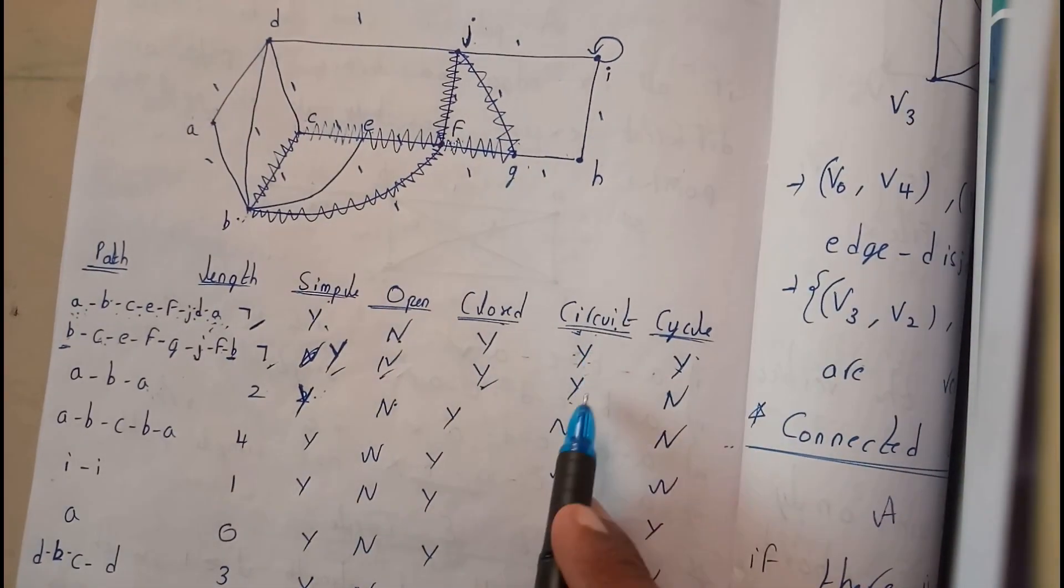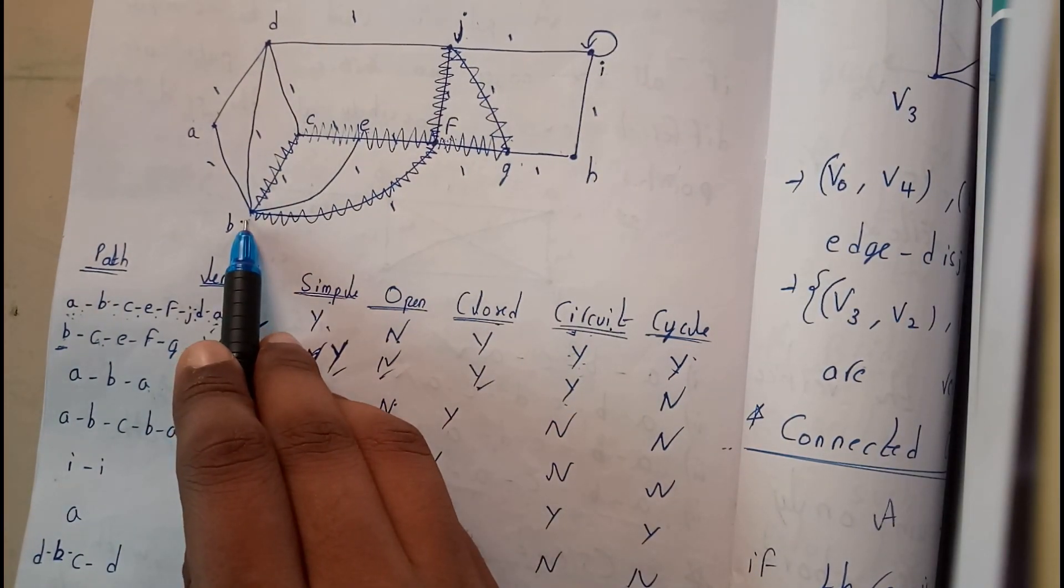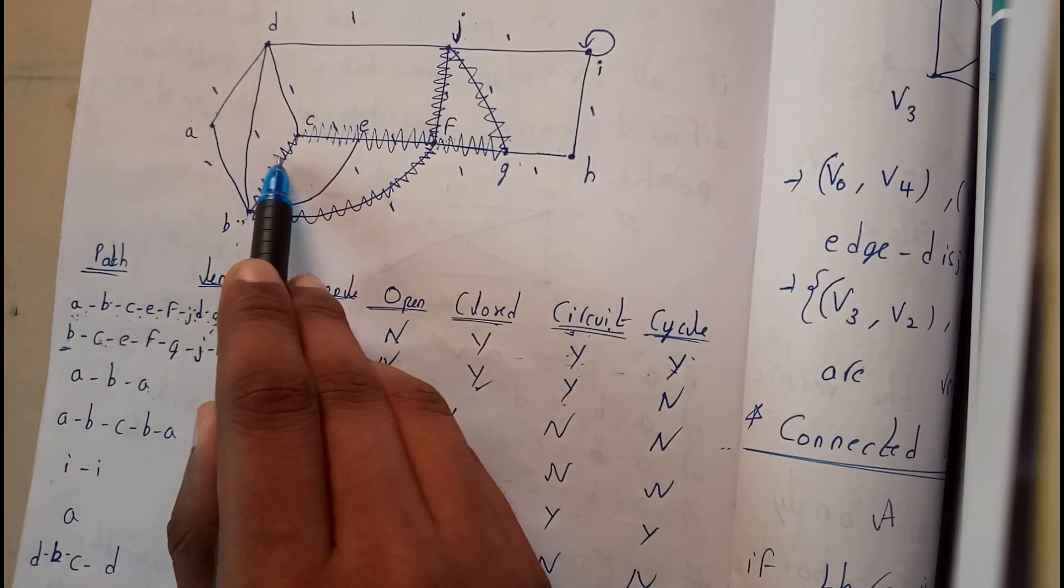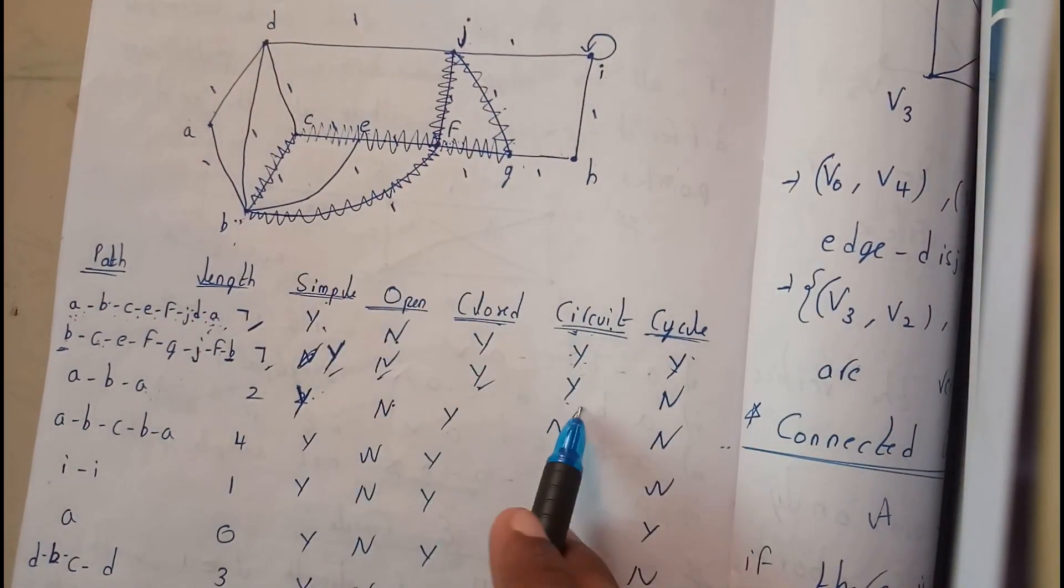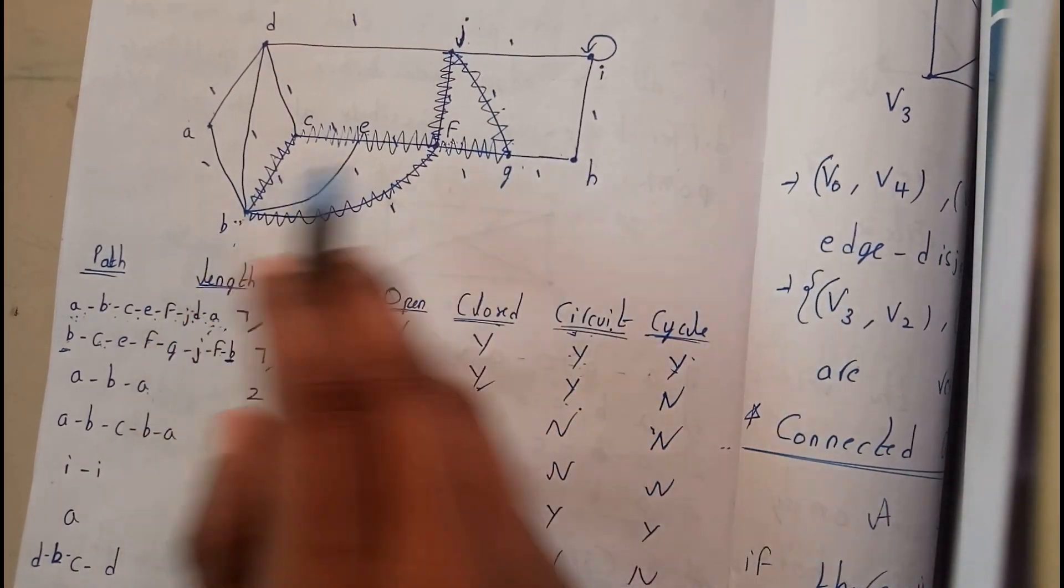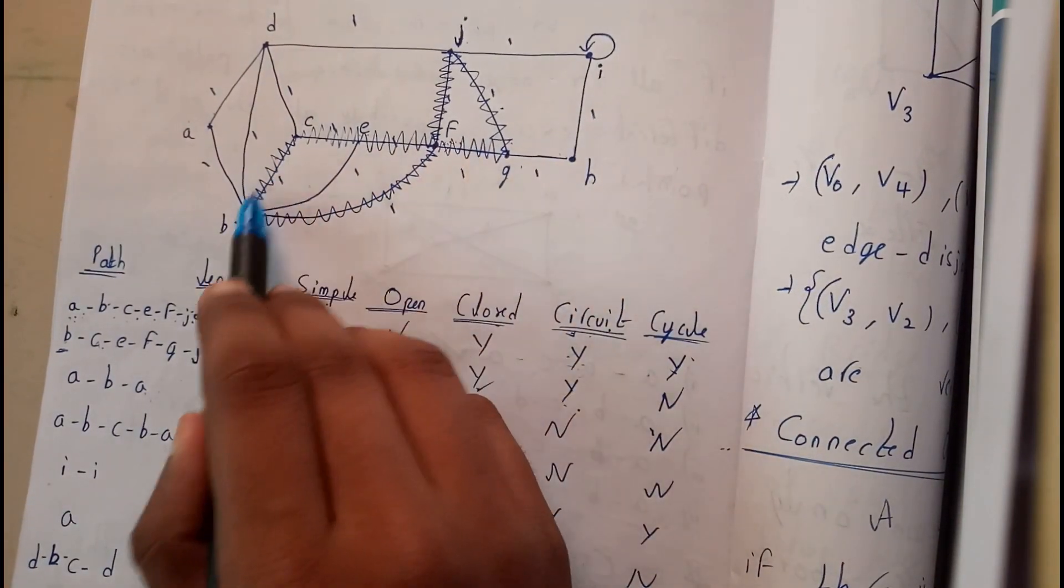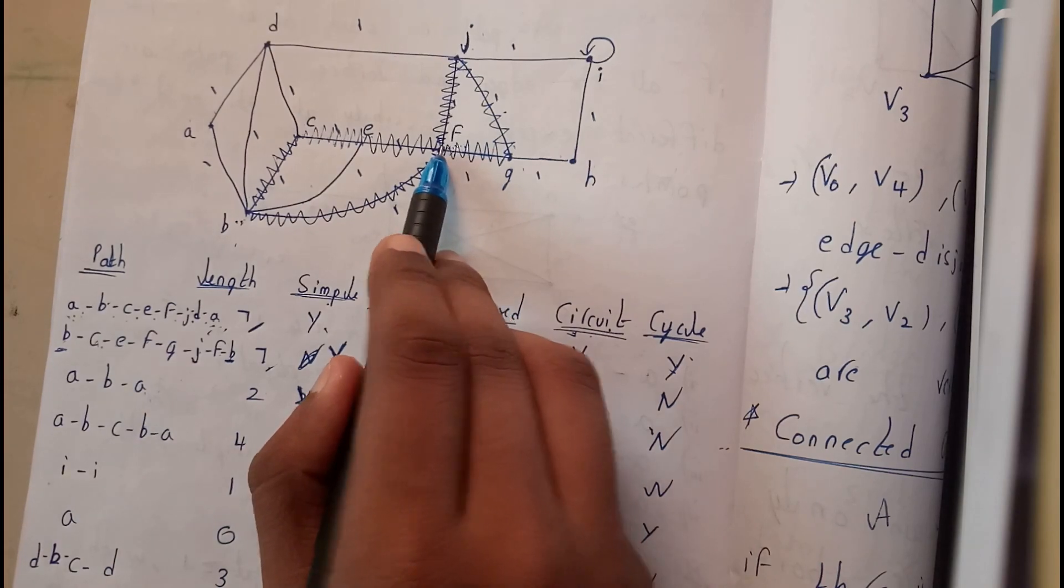Whenever we check for circuit, initial and final positions are same. We did not pass through the same edge twice. We have passed once for each edge, so it is a circuit. Whenever we check for cycle, there is a repeated vertex. We have visited F on both paths, I visited it once and visited it again. So this is not a cycle.